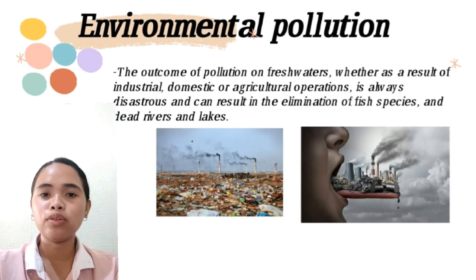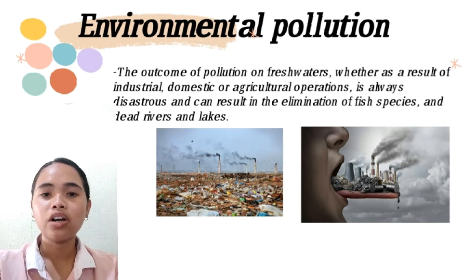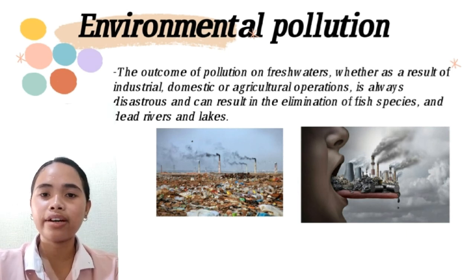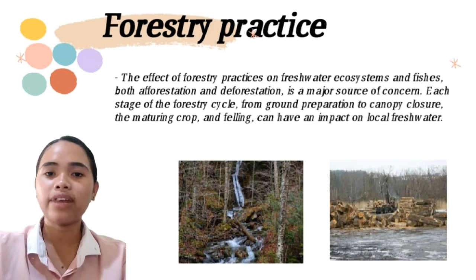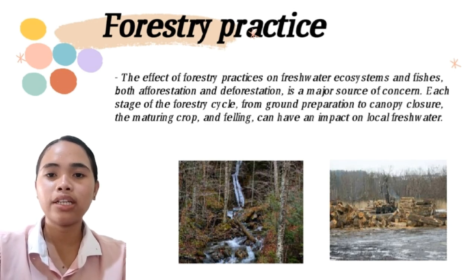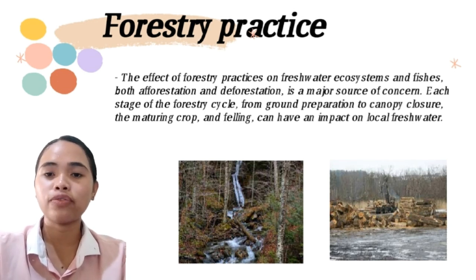Environmental pollution: the outcome of pollution of freshwater, whether from industrial, domestic, or agricultural operations, is always dangerous and can result in the elimination of fish species in rivers and lakes. Forestry practices, both afforestation and deforestation, are a major source of concern for freshwater ecosystems and fishes.